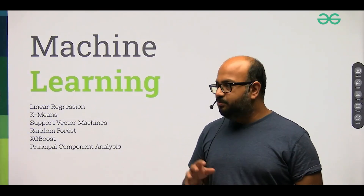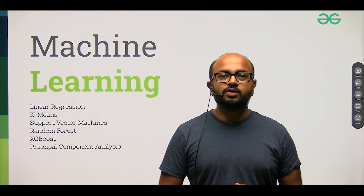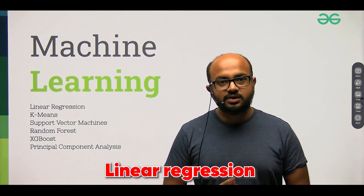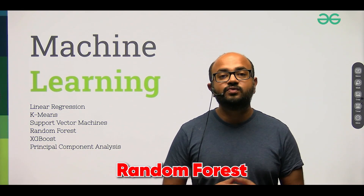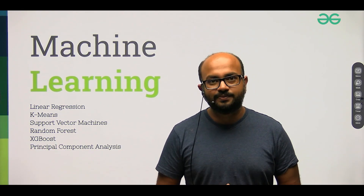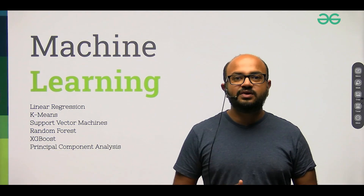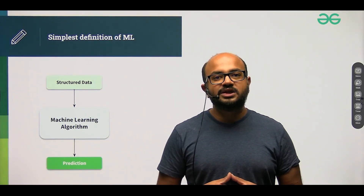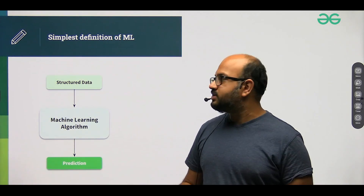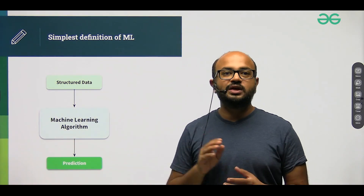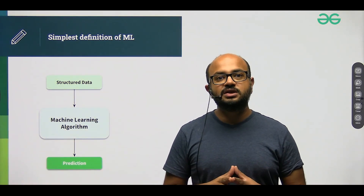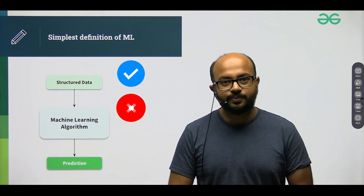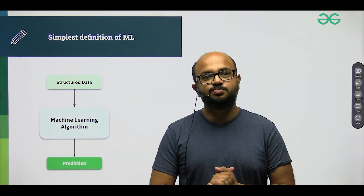In that particular scenario, what would be the models that you would use? You could take linear regression, you could take support vector machine, you could take random forest, you could take XGBoost. But let's simplify it even further. The overall scope of the problem statement is that you will have some structured data, you will implement one machine learning algorithm, and you will get a prediction of yes or no — a simple classification problem.